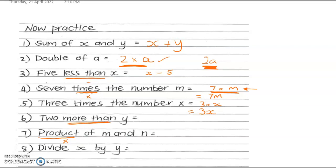Two more than y. More than means plus. So this is going to be y plus 2, or obviously it doesn't matter the order we do addition in, so 2 plus y is fine as well. The product of m and n. Well that means m times n. Product means times. And we can write that in a better way as just mn.